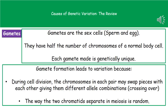The second cause to consider is the gametes — the sex cells, so the sperm and the egg in humans. We know that gametes have half the number of chromosomes of a normal body cell, and each gamete produced is genetically unique. This uniqueness arises from the way gametes are formed: during the cell division process, chromosomes come together and can swap sections with their paired chromosome — a process called crossing over — giving us different combinations of alleles.